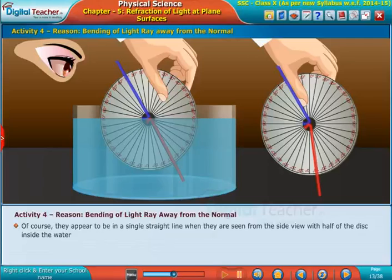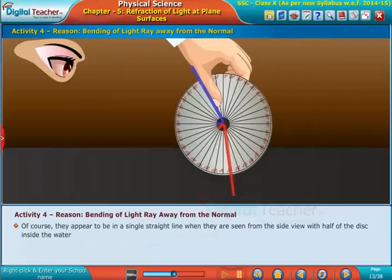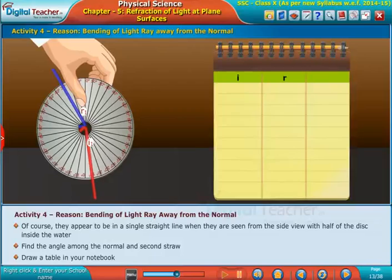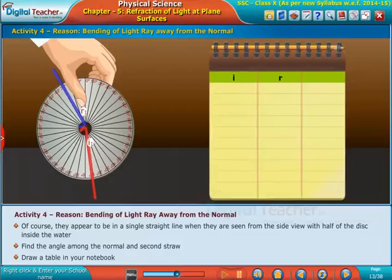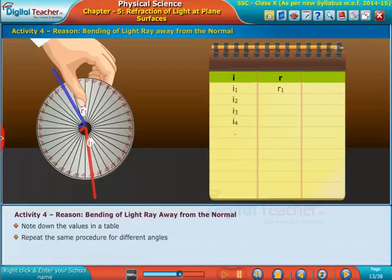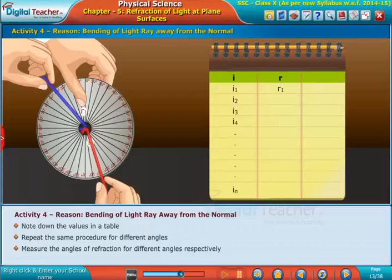Find the angle among the normal and second straw. Draw a table in your notebook. Note down the values in a table. Repeat the same procedure for different angles. Measure the angles of refraction for different angles respectively.